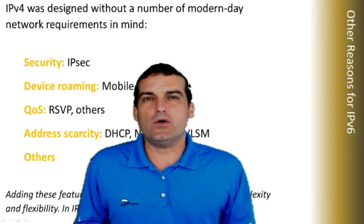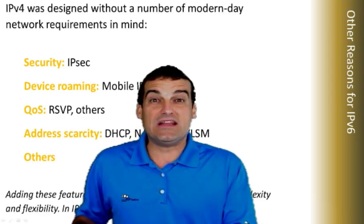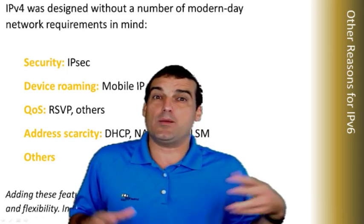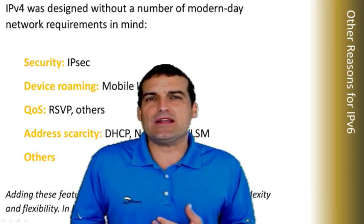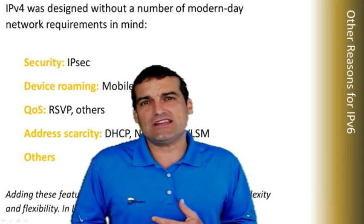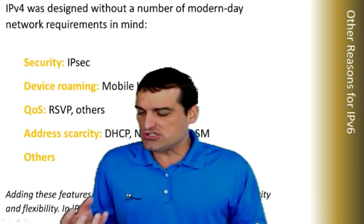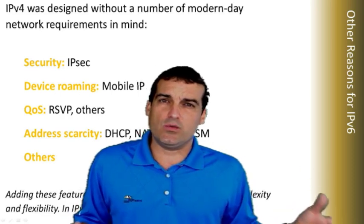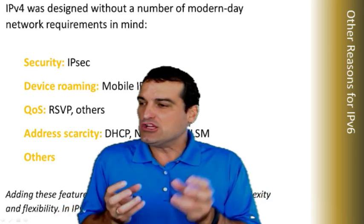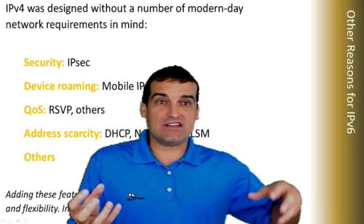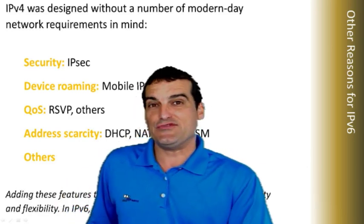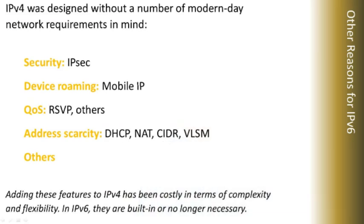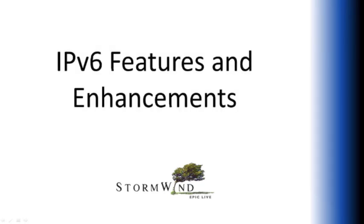You might think, well, wait a minute — network address translation gives me great security benefits because I hide the internal addressing from a would-be attacker. Well, sure, that's a slight security benefit, but understand that NAT, network address translation, breaks the fundamental paradigm of the Internet, which is there should be a unique source address communicating with a unique destination address. When you have these unique communications, you can build in all kinds of sophisticated security mechanisms. So having that true end-to-end paradigm with unique addressing is going to far outweigh the simple address hiding that we can have with network address translation.